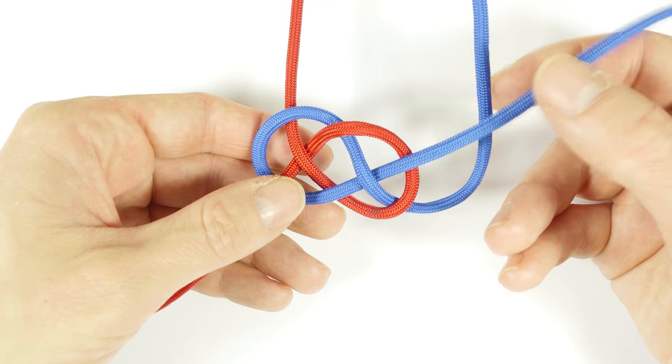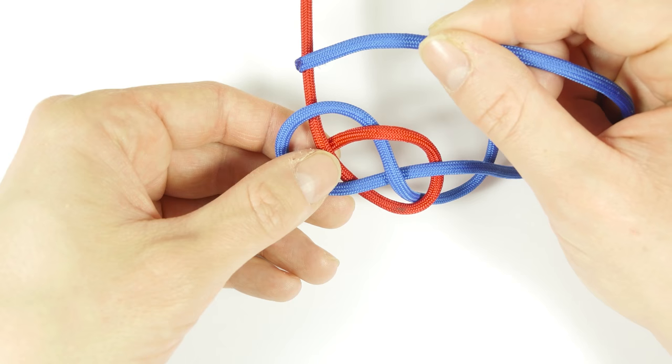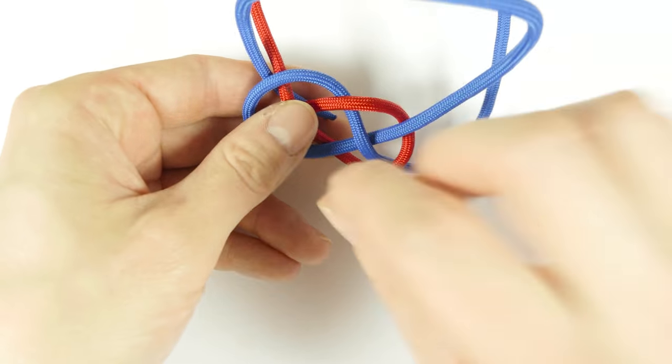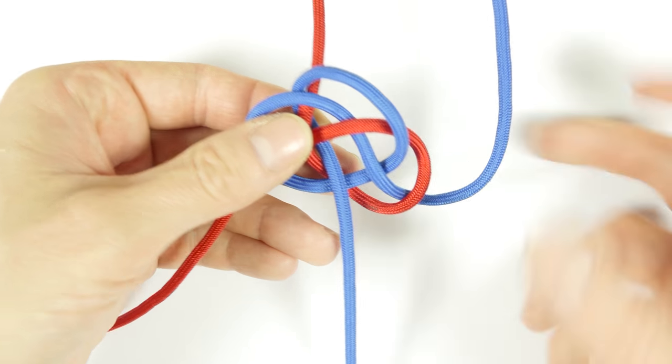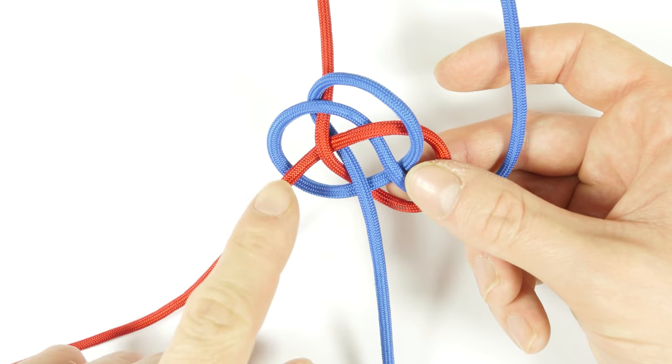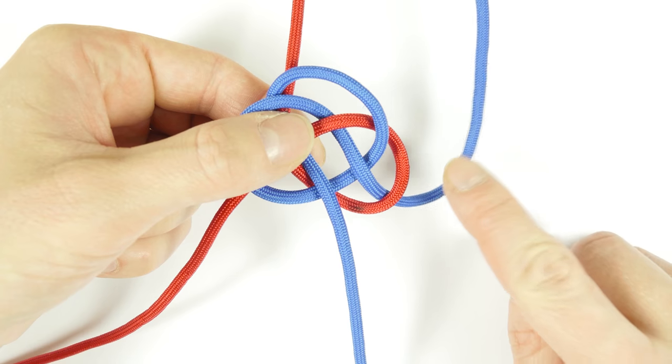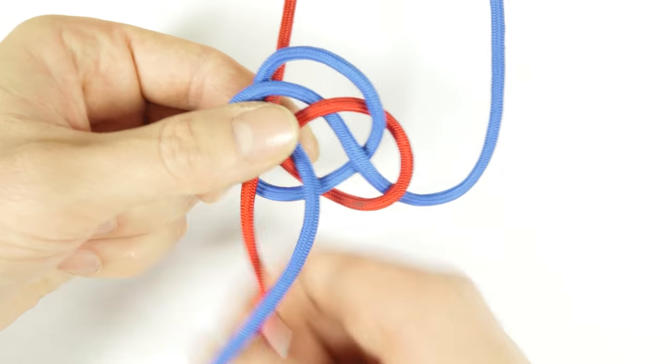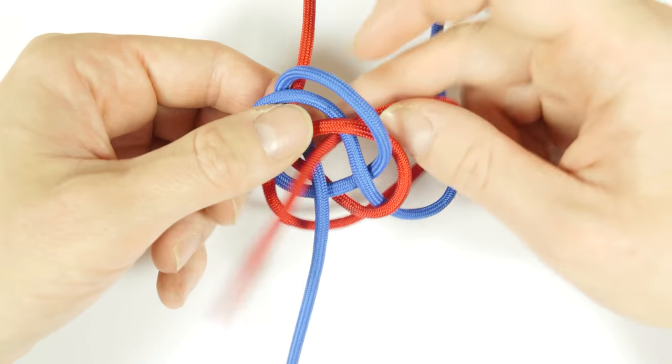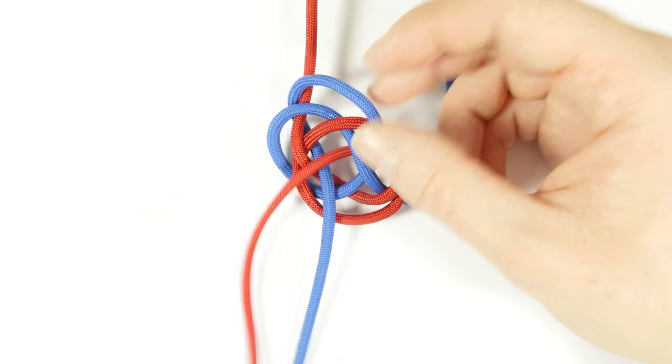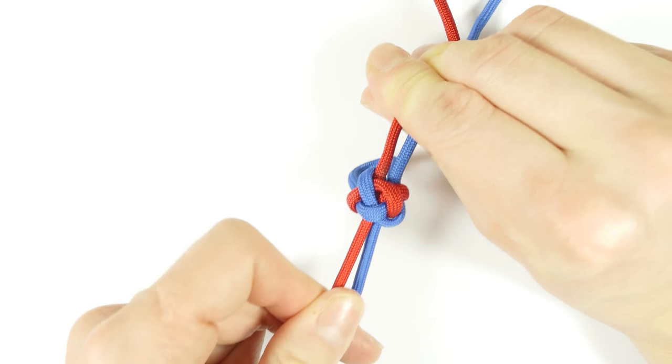You take the top right strand, so the top right tail, pass it over this strand, then under, and through the center of the Carrick Bend. Take the other tail, so the one on the bottom left, pass it past this strand, then under, and through the center of the Carrick Bend. Tighten up, and you have a Lanyard Knot.